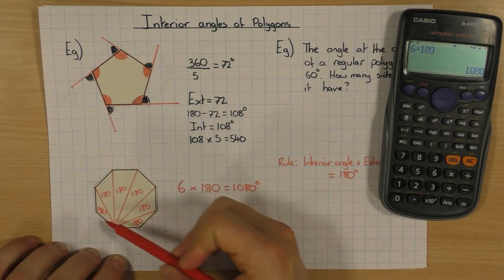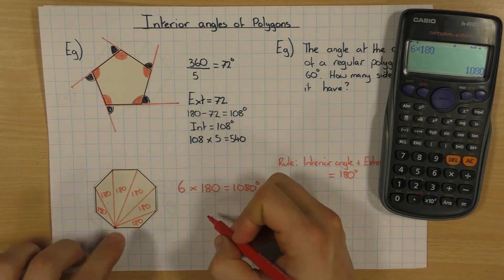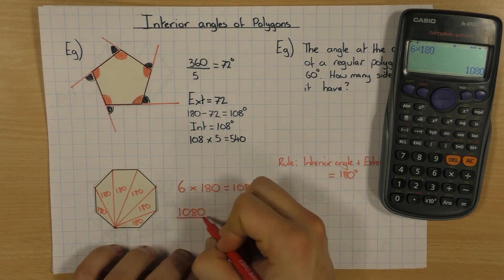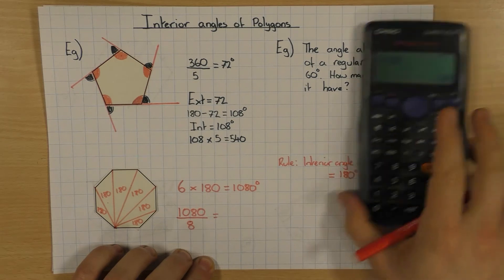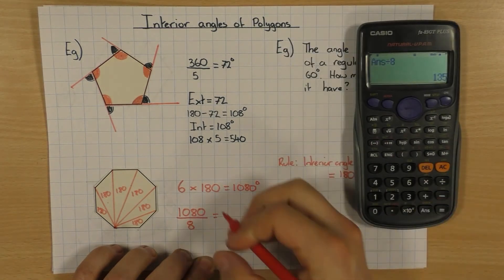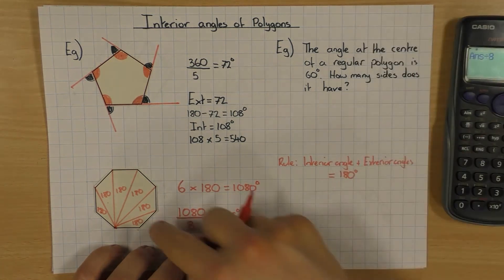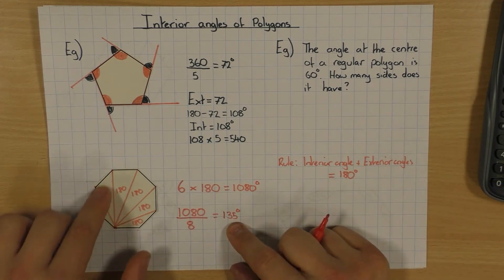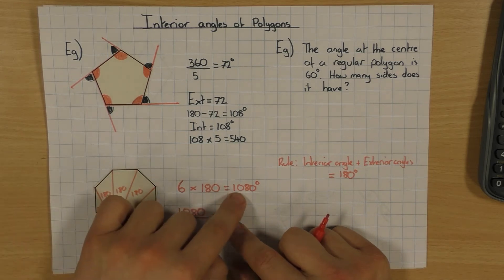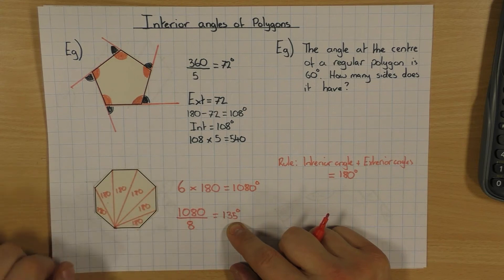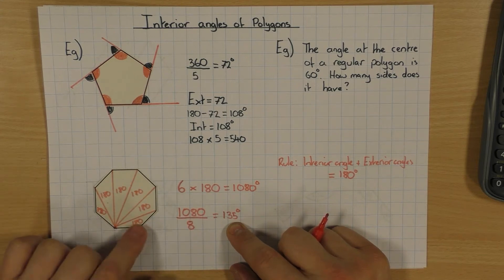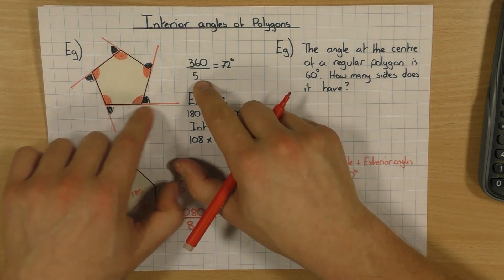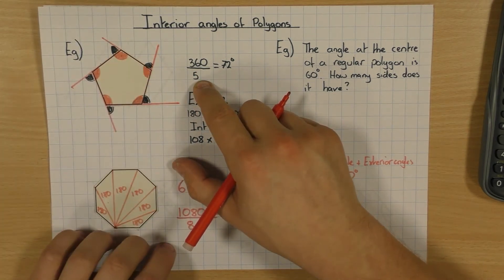Because this is a regular shape, all the angles are the same. To work out one individual angle, I take the sum of all angles — 1080 — and divide by how many angles there are, which is eight. 1080 divided by 8 gives me 135 degrees. So each interior angle of a regular octagon is 135 degrees. Note that the exterior angle trick — 360 divided by the number of sides — also only works because it's a regular shape.